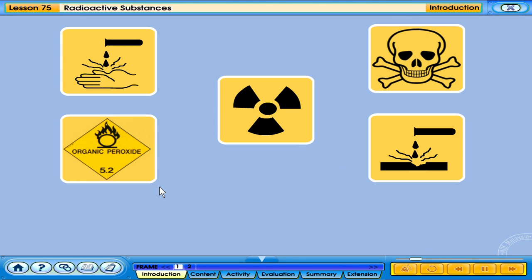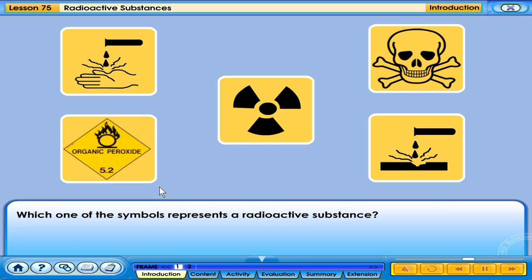The diagram shows symbols of safety elements. Observe them carefully. Which one of the symbols represents a radioactive substance? What are radioactive substances?